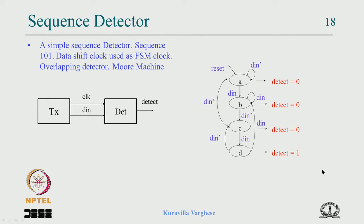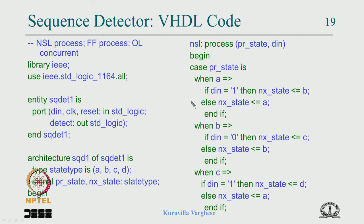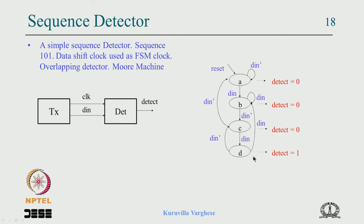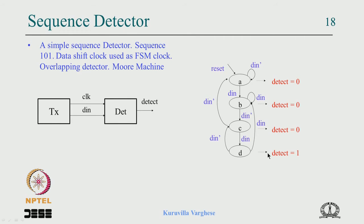Let us look at the VHDL coding of this Moore-type sequence detector. We will write the next state logic as a process, the flip-flop as a process, and the output logic as a concurrent statement — since there is only one output, there is no point in writing a full process with case for 4 states. The library clause uses IEEE, the package is standard; the entity sq_detect_1 has DIN, clock, reset as input standard logic, and detect as output standard logic.